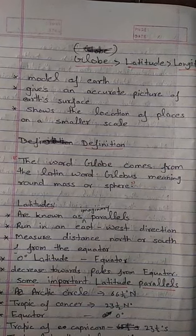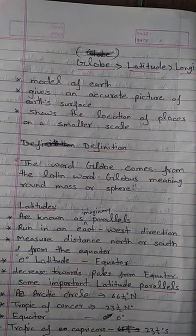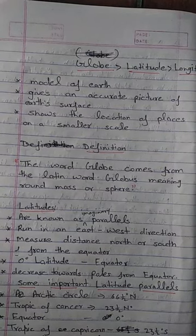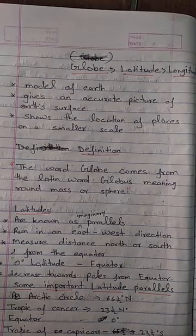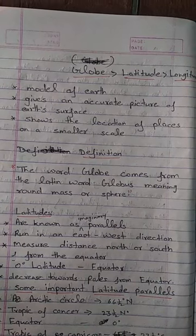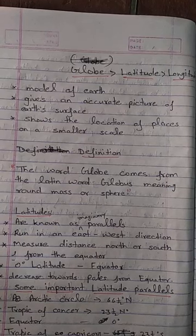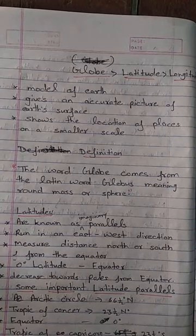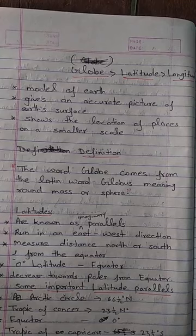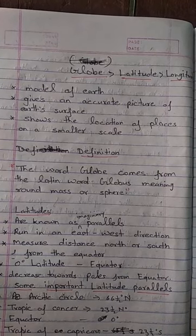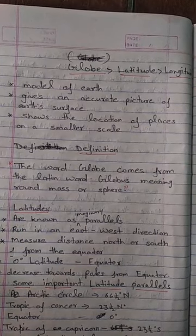Latitudes decrease towards the poles from the equator. Poles are the top and bottom of a globe. The top of the globe is known as the North Pole, or Northern Hemisphere. The bottom of the globe is known as the South Pole, or Southern Hemisphere.